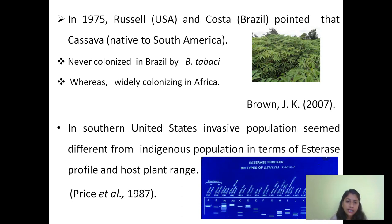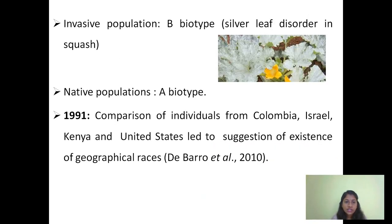In southern United States, they used esterase patterns and host plant range to differentiate populations. They found the invasive population was different from the indigenous population based on esterase patterns, and named the native populations as the A biotype and the invasive population as the B biotype. Based upon all these inferences, by the year 1991 the biotype concept was formally established.